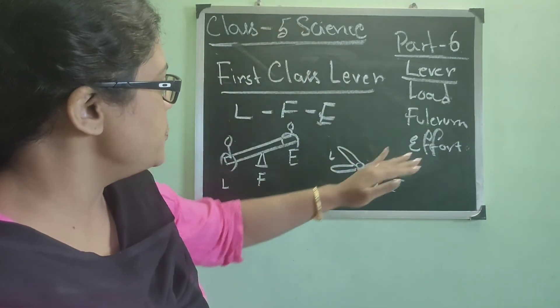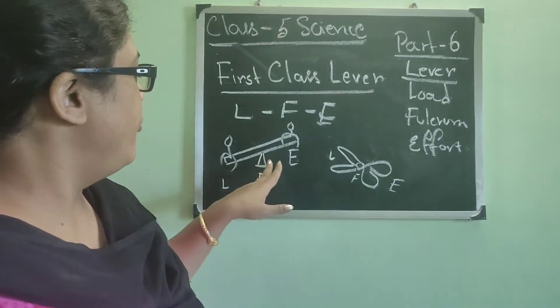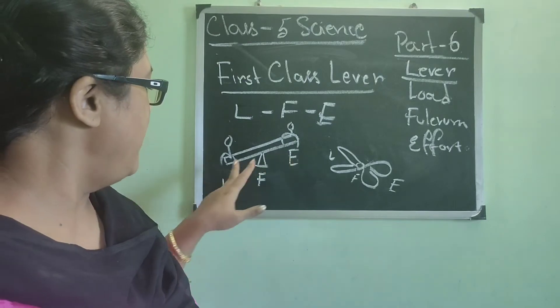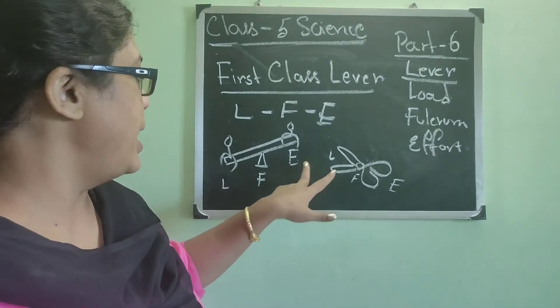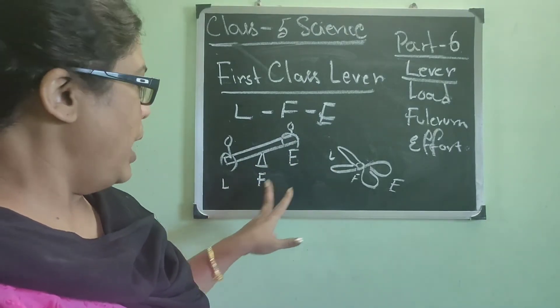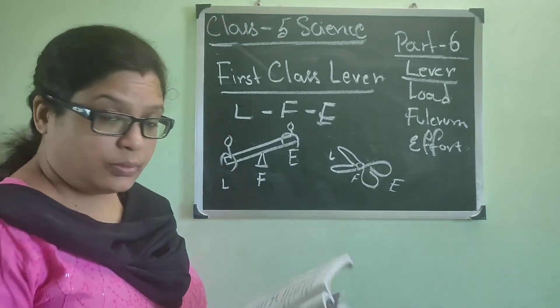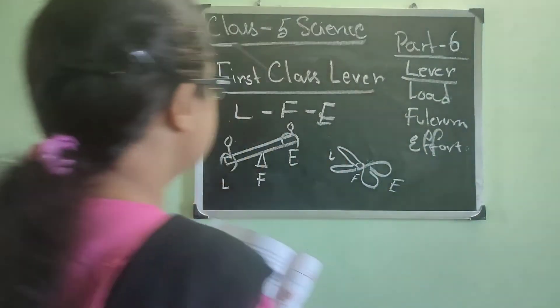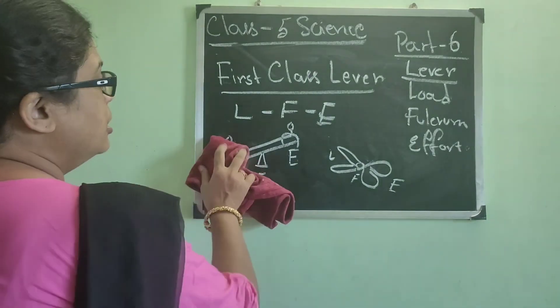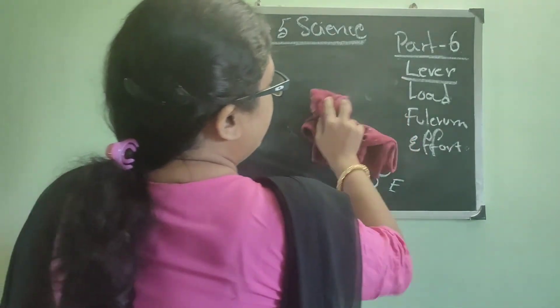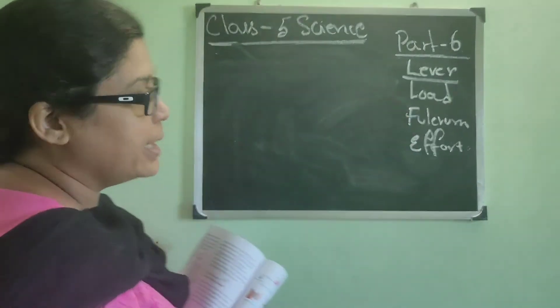So this is the arrangement of first class lever, where in the center there is fulcrum, on one side there is load, and on another side it is effort. Now we will go to the second, I think you have understood. Now we will go to the next one, that is the second class lever.